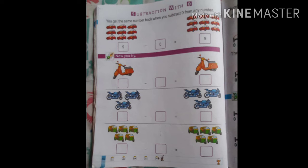Usi tarah. Yaha pe kitnay gari hai vehicle hai? Three. Three ko kya chisie subtract karna hai? Zero ko. Three minus zero. Zero se subtract karna ke baad phir se vohi number wapas aajayata hai. Three.